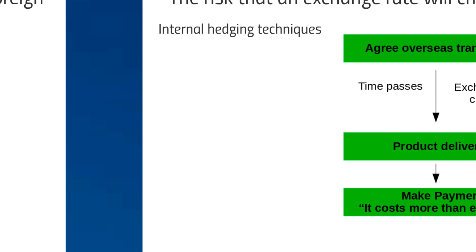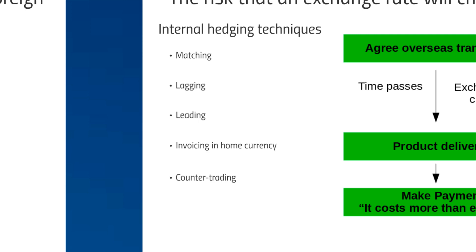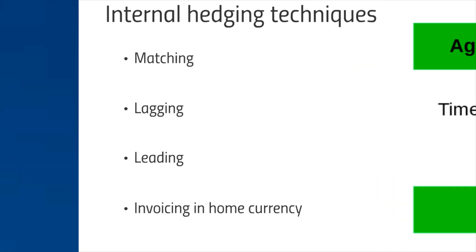Now I'll hand over to Nick who has a number of solutions. These are called internal hedging techniques — techniques that we can use within the business and the way we're managing the business to keep the risk down. We'll also look at what are called external hedging techniques in a different chapter, which is where you use money markets to manage your risk. But for the moment, just the internal ones: matching, lagging, leading, invoicing in the home currency, counter trading, and netting intercompany transactions.